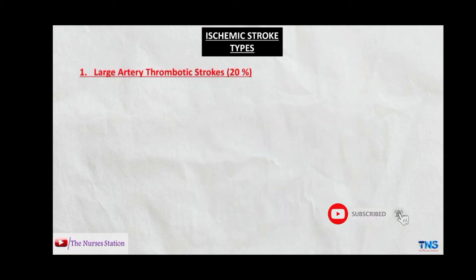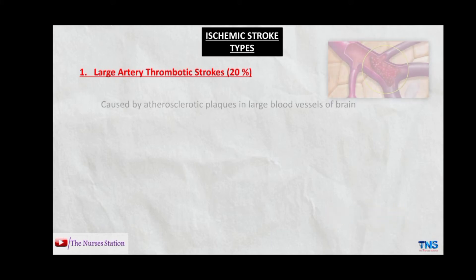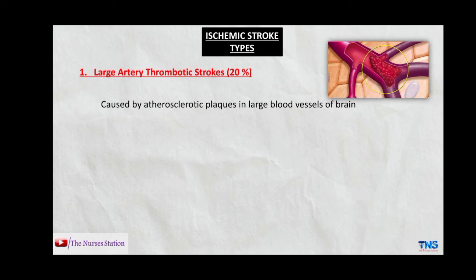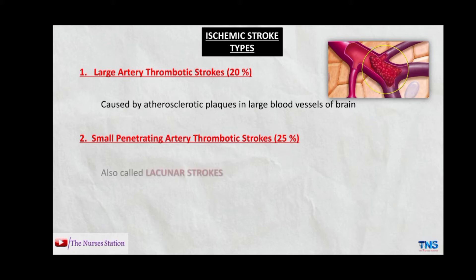The types of ischemic stroke include: large artery thrombotic strokes, which account for 20% of ischemic strokes and are caused by atherosclerotic plaques in large blood vessels of the brain. Second are small penetrating artery thrombotic strokes, accounting for 25% of all ischemic strokes. These are also called lacunar strokes because of the cavity created after the death of the infarcted brain area. They affect one or more arteries of the brain vasculature.